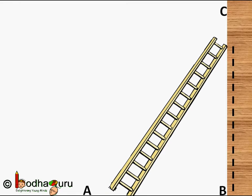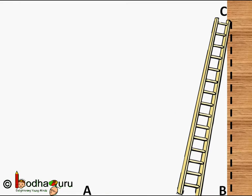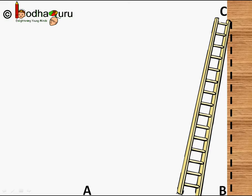Conversely, to climb higher we need to increase angle X. In that case the base of the ladder comes closer to the wall — the measure of side AB reduces but the height BC increases. So when X increases, the opposite side increases but the adjacent side reduces. The hypotenuse is the same — it is the length of the ladder, which is not getting stretched or compressed, so hypotenuse remains the same as you move the ladder.